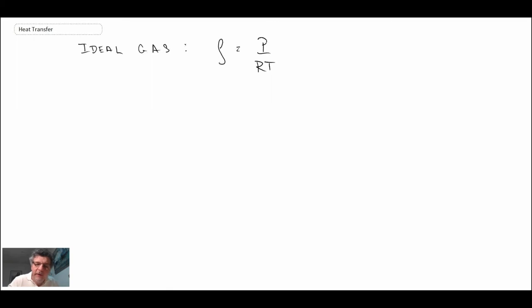If we're dealing with an ideal gas, we can use the ideal gas equation. With that, we can rewrite beta in the following manner. Making a substitution for the density, we get 1/T in Kelvin equals beta for an ideal gas.